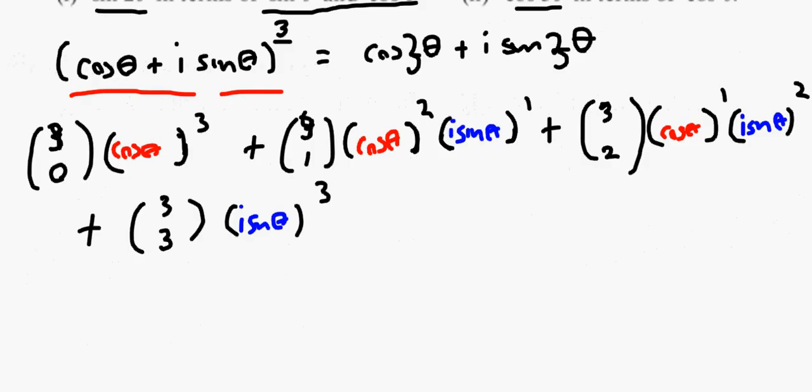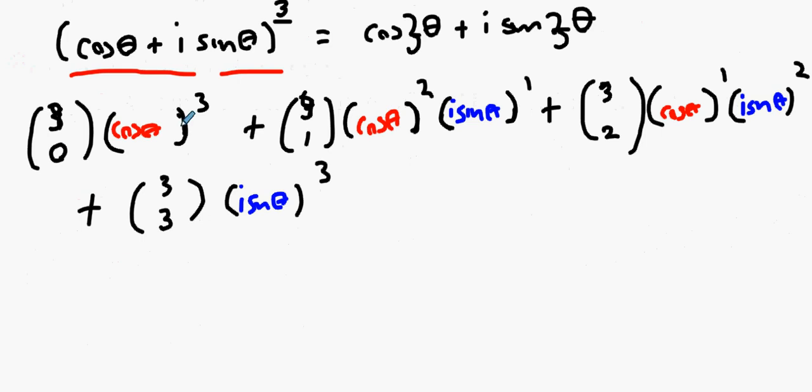Now let's look at the first one. What is 3 C 0? It's just 1. So it's cos cubed. What about the next one? What's 3 C 1? 3. Cos squared. It's i sine theta, isn't it? But where will I put the i? Put the sine theta part there and put the i there. What about the next one? 3 C 2? Anybody? It's also 3. So it's 3 cos theta there.